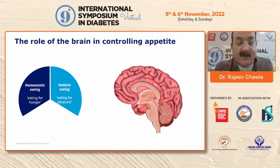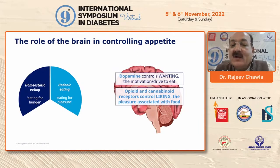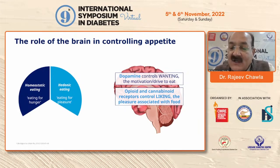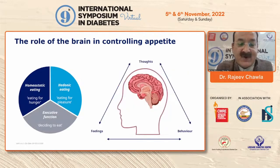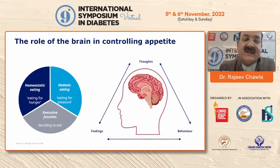There is hedonic eating — eating for pleasure — which in spite of hardly any hunger leads to compulsive eating to get pleasure from a meal, and this induces obesity. Dopamine controls wanting: the motivation, the drive to eat. Opiate and cannabinoid receptors control liking. So if you have a drug that can address cannabinoid receptors, you may have a check mechanism on dopamine-like receptor-induced wanting or over-drive to eat, because there will be lesser pleasure associated with food. A third important function of the brain is executive function, which decides how much is homeostatic eating versus hedonic eating.